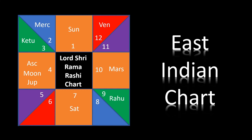The East Indian chart is also known as the Sun radial chart and is based on Kalpurush, where the zodiac signs or Rashis are fixed but the houses move.